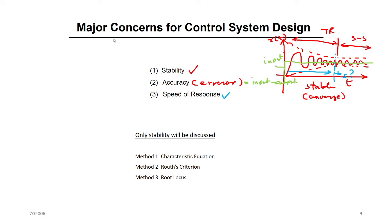Remember in the last lecture, we discussed the major concerns of control systems design — when you design the controller for the transient response. What are the major concerns? Number one is stability. You want to have a stable system. When we say stable, that means the transient response or the time response should be converging — it should converge to a certain value, not diverging. Converging means stable. Diverging means unstable.